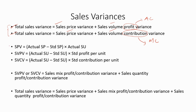The sales price variance is equal to the difference between the actual selling price and the standard selling price. We can calculate the sales volume profit variance by taking the difference between the actual sales units and the standard sales units, then multiplying by the standard profit per unit. For the sales volume contribution variance, the only difference is that we take the standard contribution per unit instead of standard profit per unit.